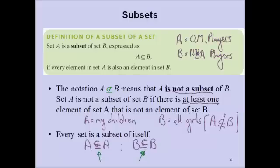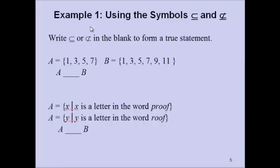Here's our example: using the symbols, we plug these in. The element 1 shows up in B, the element 3 shows up in B, the element 5 shows up in B, and the element 7 shows up in B. So this is a subset — and it's actually a proper subset, because there are two additional elements in B that are not in A.